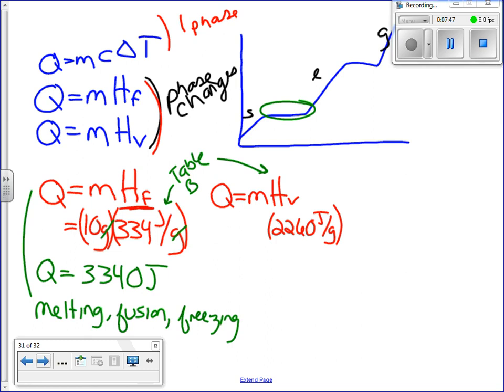As you can see, it takes 2260 joules to vaporize a gram of water, but it only takes about 334 joules to melt it. So it takes an awful lot more energy to boil it than it does to melt it, which should make sense.